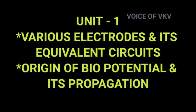In the first unit, there are 2 important questions. The first one is various electrodes and their equivalent circuits. The second one is origin of biopotential and propagation. These are the 2 important questions for unit one, and you can cover them in detail including circuit diagrams for part B answers.